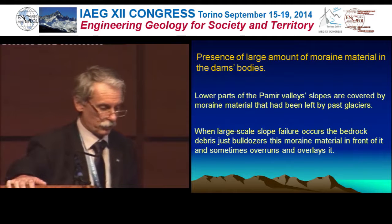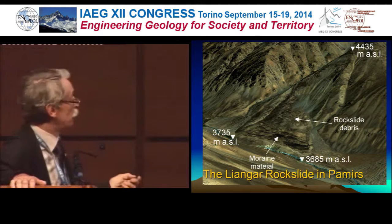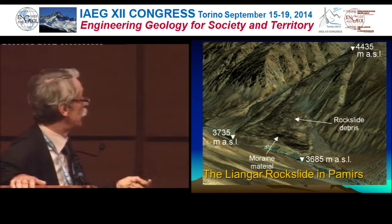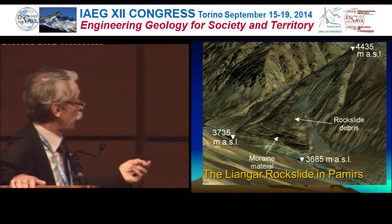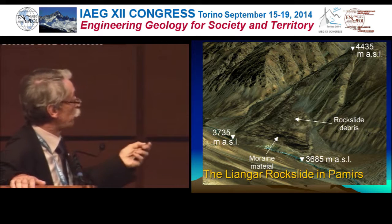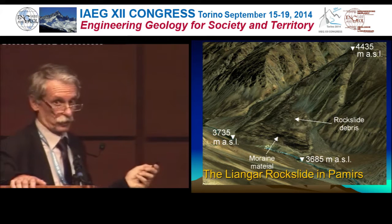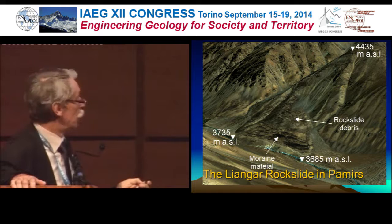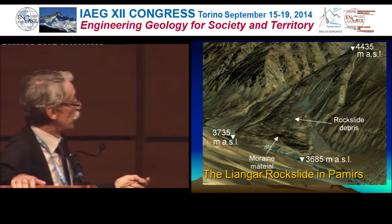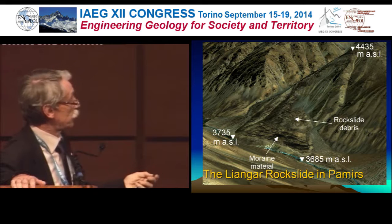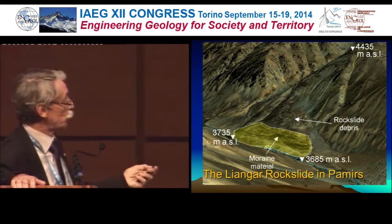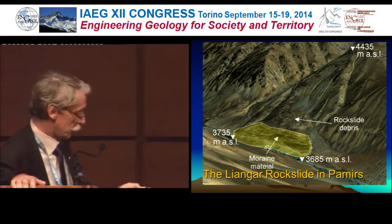Let's look at an example. It is the Emom landslide in Pamirs — distinct headscarp. The frontal part is composed of moraine material, while most of the internal part is pure rockslide debris. Another case study, also in Pamirs, and again we have a distinct headscarp, moraine material in front, and rockslide debris behind it that pushed it.